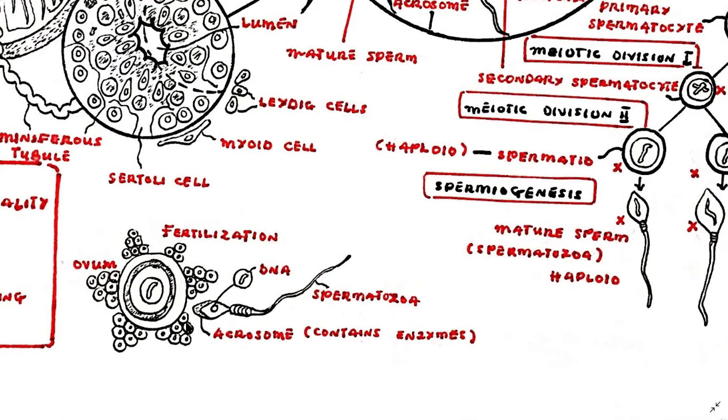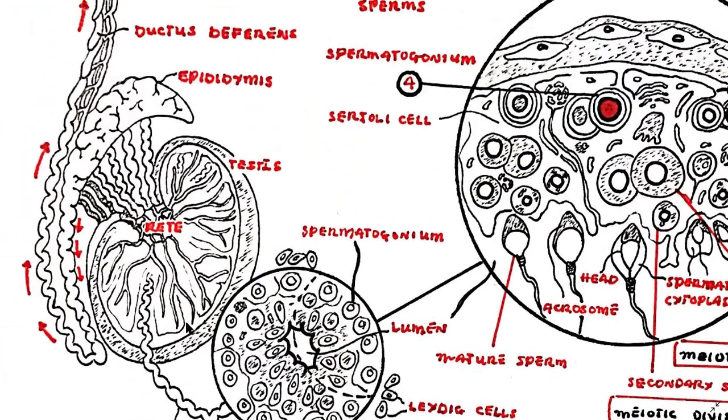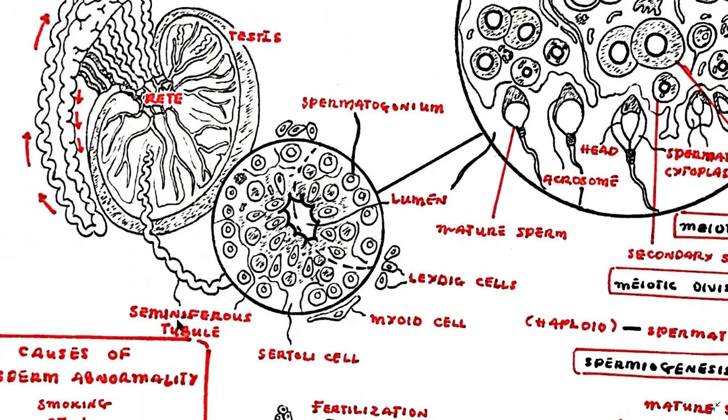The testes is made up of very long tightly coiled tubes called the seminiferous tubules that are surrounded by layers of connective tissue, blood vessels and nerves. The seminiferous tubules are linked to straight tubules and a network of tubes called the rete testis.